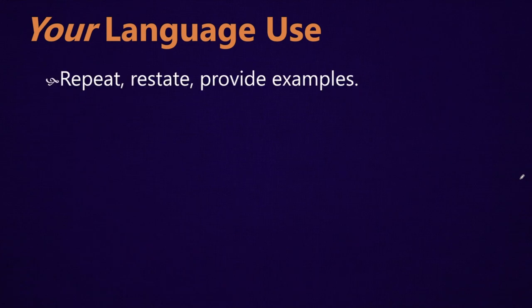Now let's talk about your language use in the classroom. Try to repeat, restate, and provide examples as much as possible. One of the difficulties with listening is that the language learner only gets one chance to hear what was said. So if they miss something and it was only said one time, they won't have heard it. But if you repeat and restate and provide examples, it gives them multiple opportunities to not only understand what's being said, but also to catch it if they missed it the first time.